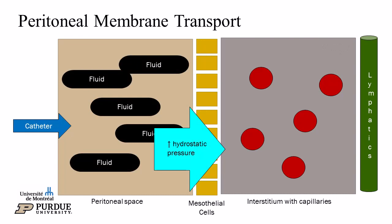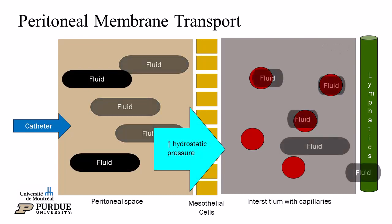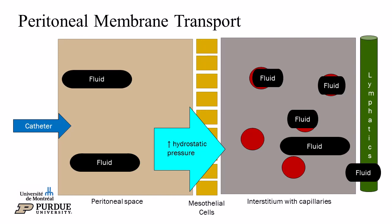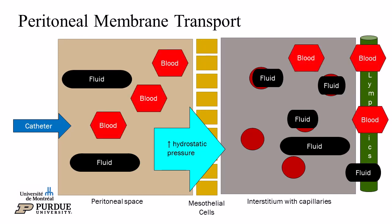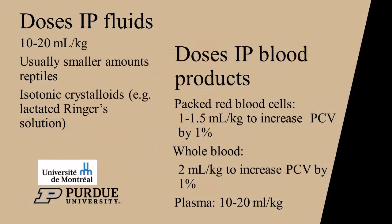Fluids increase the hydrostatic pressure in the peritoneum and, per Starling's laws, the fluid then moves into peritoneal capillaries. Excess interstitial fluid, red blood cells, and plasma components are absorbed by the diaphragmatic lymphatics. When giving peritoneal fluids, the dose is similar to what is given subcutaneously for that species.